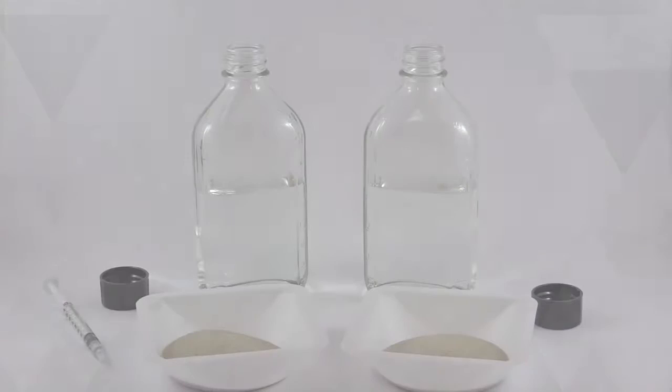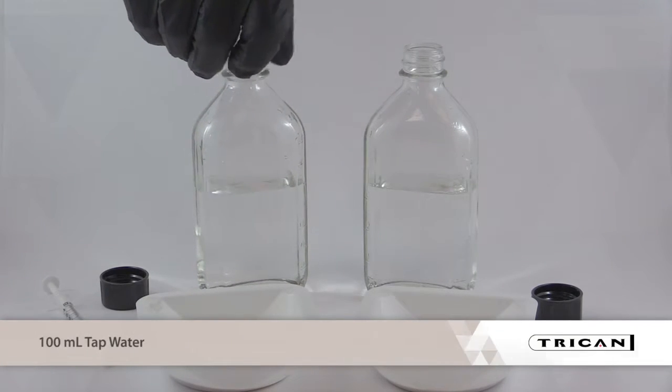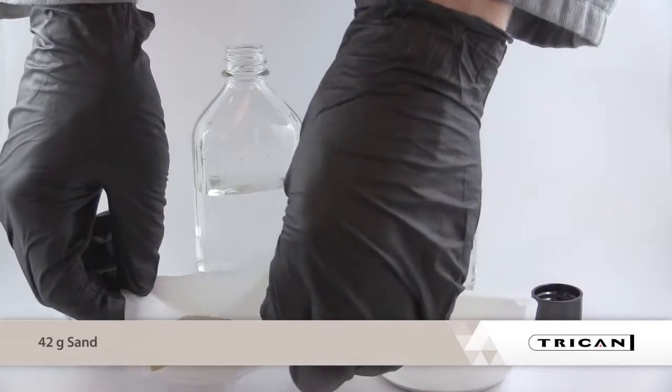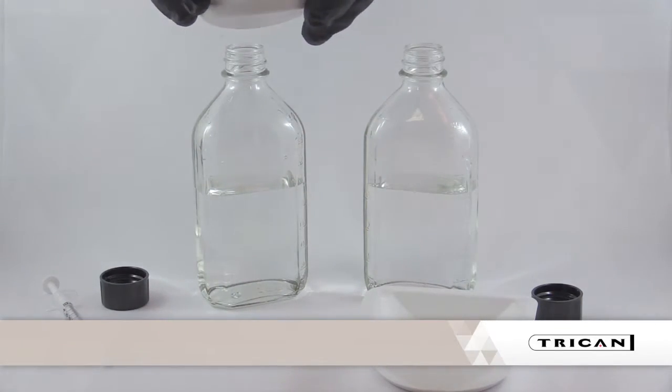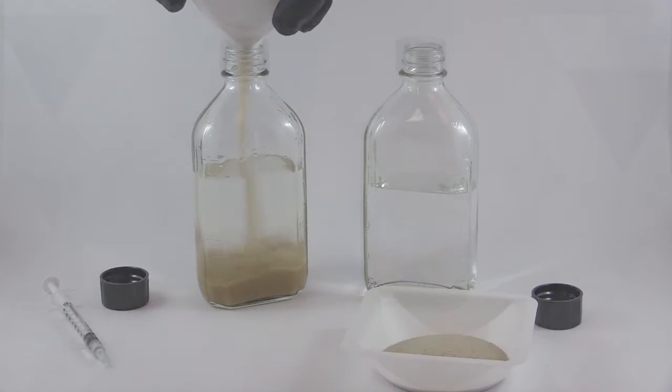The following is a demonstration of how Trican's MVP frac works. Here we have 100 milliliters of water and 42 grams of sand for each bottle. This is equivalent to 420 kilograms per cubic meter or 3.5 pounds per gallon sand concentration.